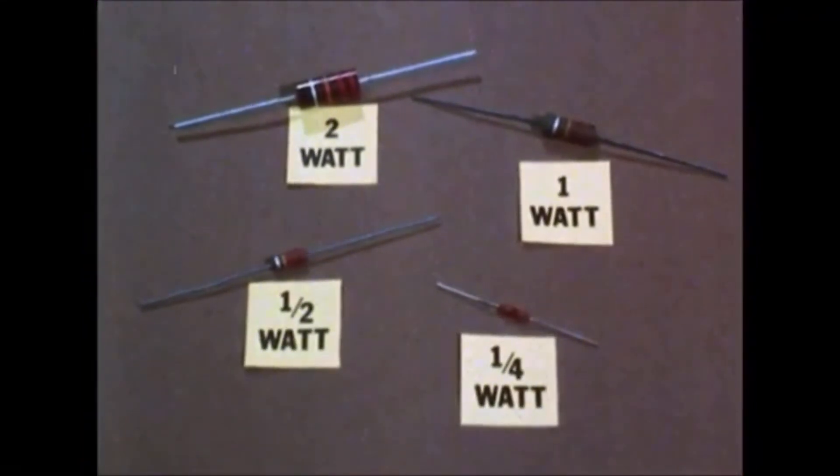Resistors also absorb power and so they too have a power rating in watts. These carbon resistors all have the same resistance, but the rate at which they use up electrical energy differs, so their power ratings also differ. The bigger the resistor, the higher the wattage they absorb.